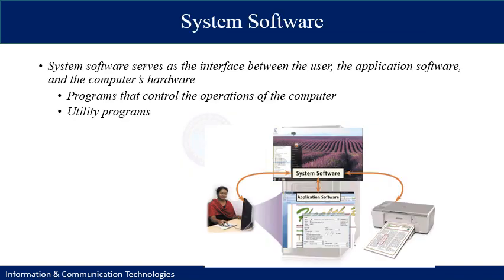The second branch of software is system software, which serves as an interface between the user, the application software, and the computer hardware. The operating system is one of the most used system software. System software also includes programs that control the operations of the computer — not limited to utility programs but also programs to achieve basic computer input, output, storage, retrieval, and access.